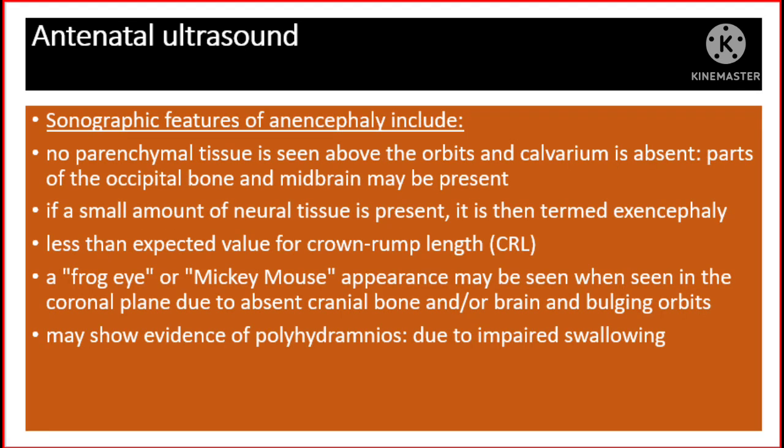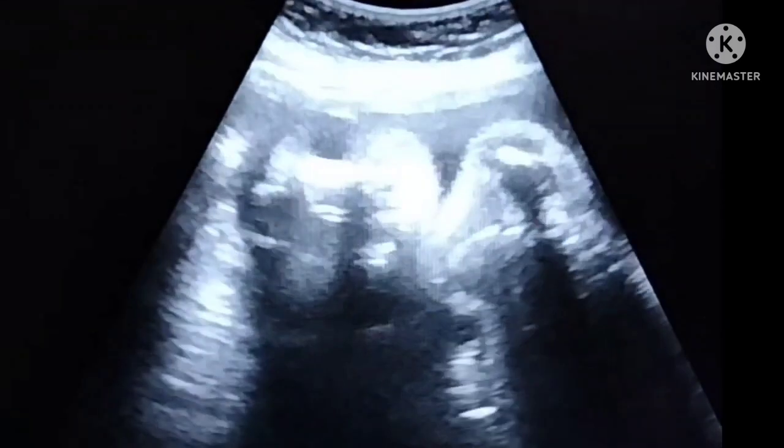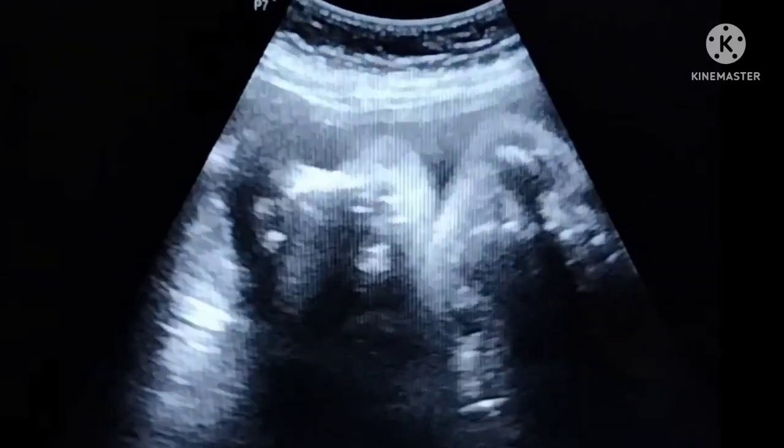Sonographic features of anencephaly include: no parenchymal tissue seen above the orbits, and the calvarium is absent. Parts of the occipital bone and midbrain may be present. If a small amount of neural tissue is present, it is termed exencephaly. A frog eye or Mickey Mouse appearance may be seen when viewed in the coronal plane, due to absence of cranial bones and/or brain, and bulging orbits.